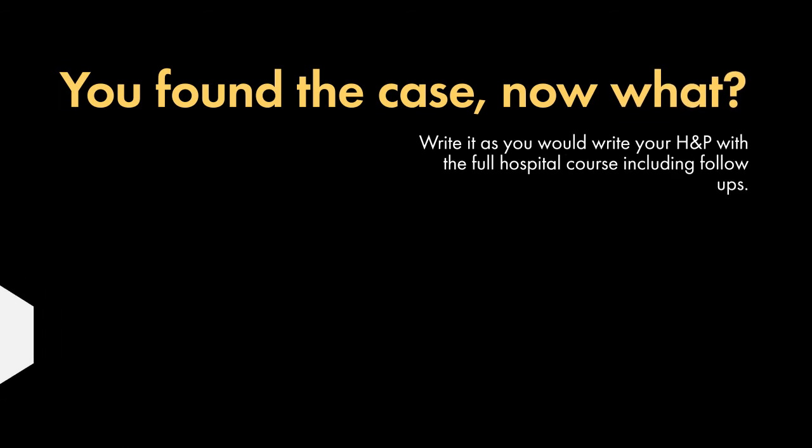Now that you've gotten the case and confirmed it's not commonly reported in literature, the next step is to actually write the case as if you're writing a regular H&P that you'd normally write on an admission. Just tell the story of the case — talk about what happened in the ED, what happened while they were on admission, the specific treatment strategies in that particular case, and then talk about the outcome.